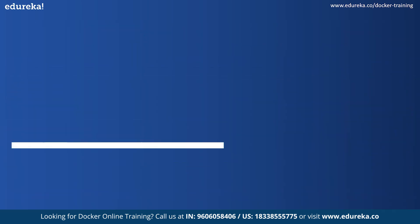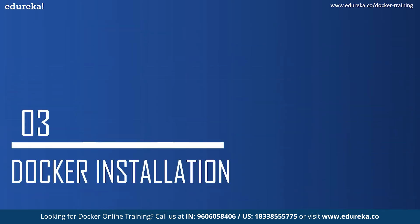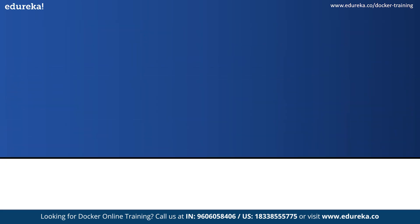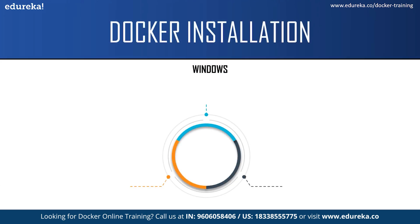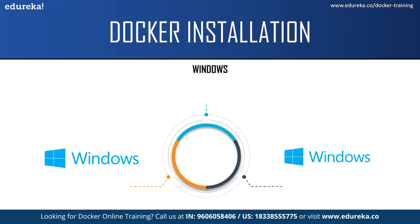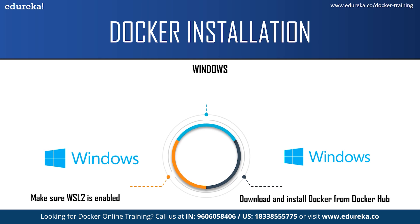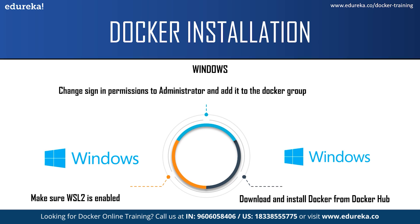Now for Docker installation on different systems — starting with Windows. You first download and install Docker from Docker Hub. Then you make sure that the Windows Subsystem for Linux is enabled. Finally, you change the administrator permissions and add your user to the Docker group.